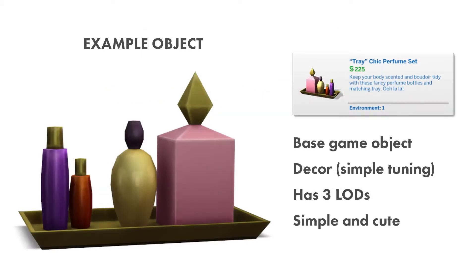For this overview I'm using the Trey Chic Perfume Set object. I chose this object for a few reasons. First, it's base game compatible so it's accessible for Sims players. Second, it's one of the most simple objects in the game because it's decor — it doesn't have interactions with Sims or complicated tuning. Also the package file itself has all of the essentials like three LODs, which I'll get into later, and really it's just a cute object.